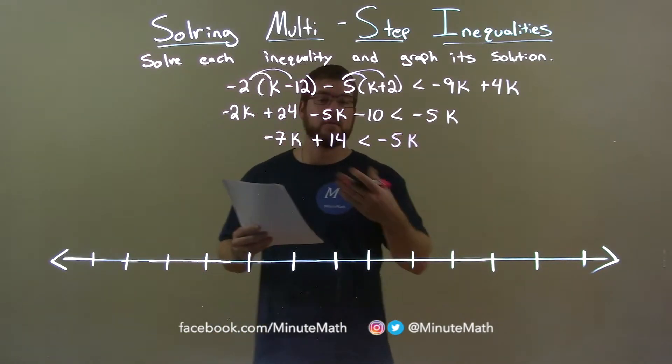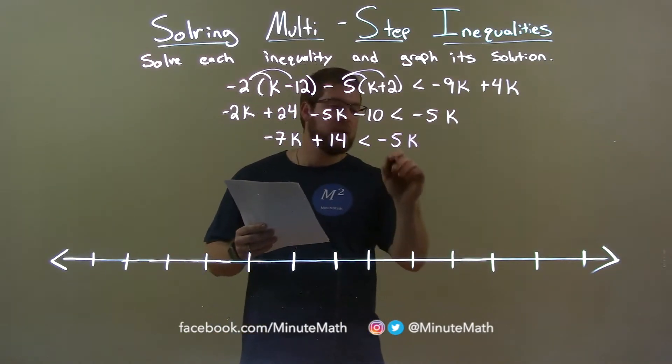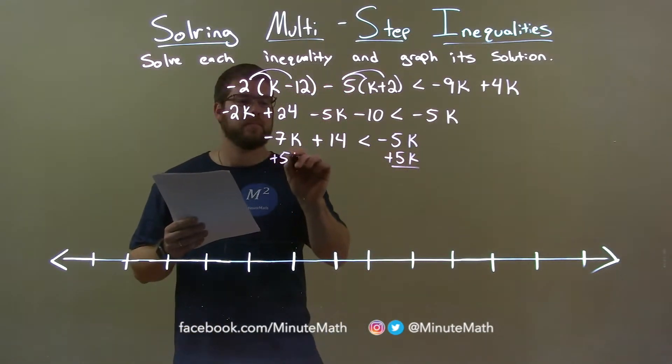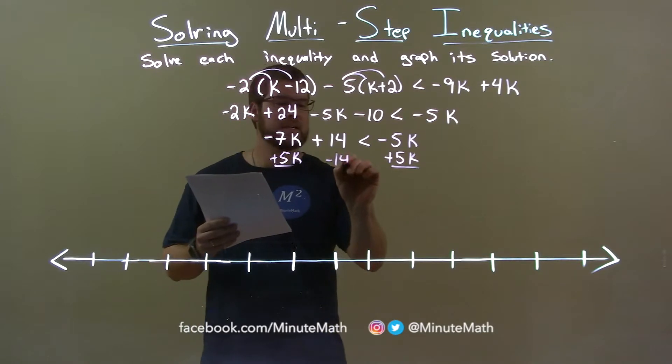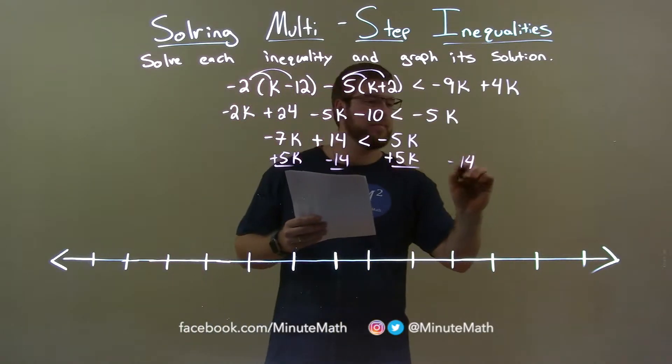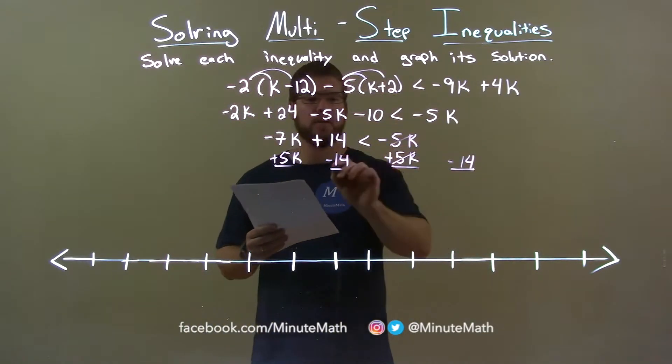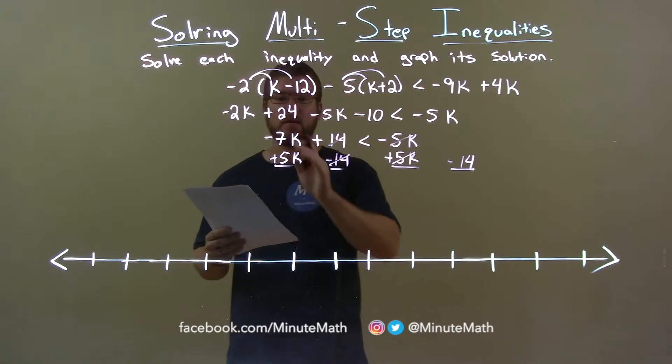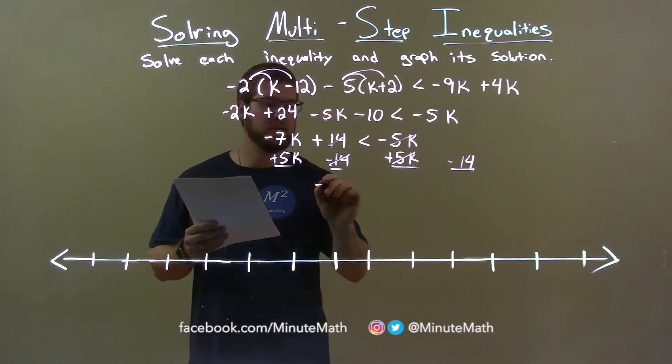So, I'm going to bring my k's to the left, my numbers to the right. Add 5k to both sides here and subtract 14. The 5k's cancel here and the 14's cancel there. Negative 7k plus 5k is negative 2k.